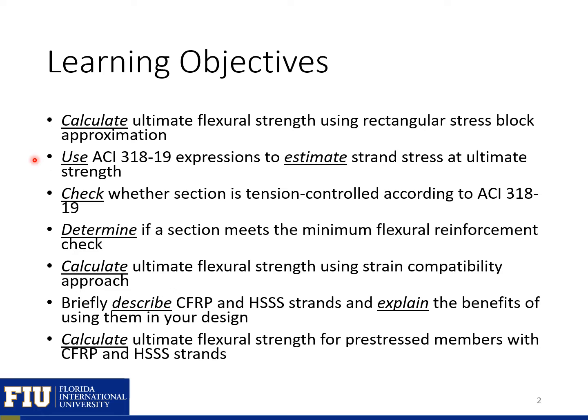Use ACI 318 expressions to estimate strand stress at ultimate strength. Check whether the section is tension-controlled according to ACI 318. Determine if a section meets the minimum flexural reinforcement requirements. Calculate the ultimate flexural strength using the strain compatibility approach. Briefly describe CFRP, carbon fiber, and high-strength stainless steel strands, explain the benefits of using them in design, and calculate the ultimate flexural strength for pre-stressed members with these different types of strands.